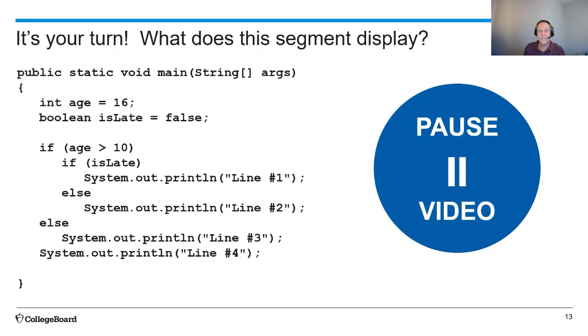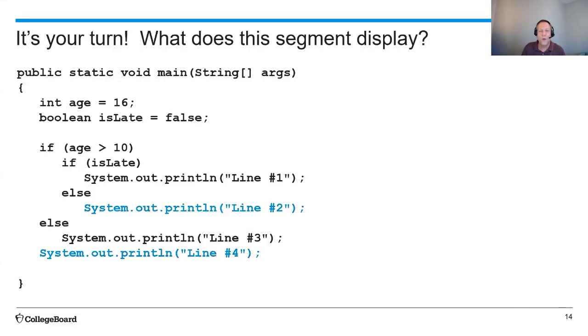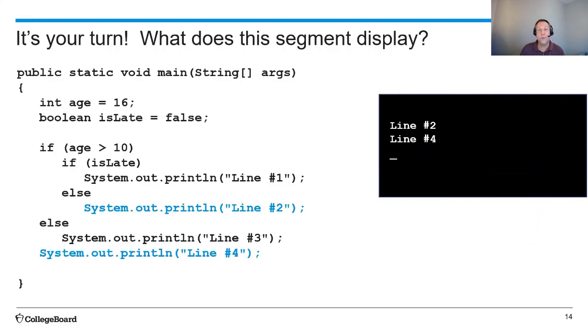All set? Okay, here we go. So what does this print out? Well, it looks like it's going to print out line number two and line number four. Let's look at why. Well, age is equal to 16, and isLate is a boolean that's set to false.